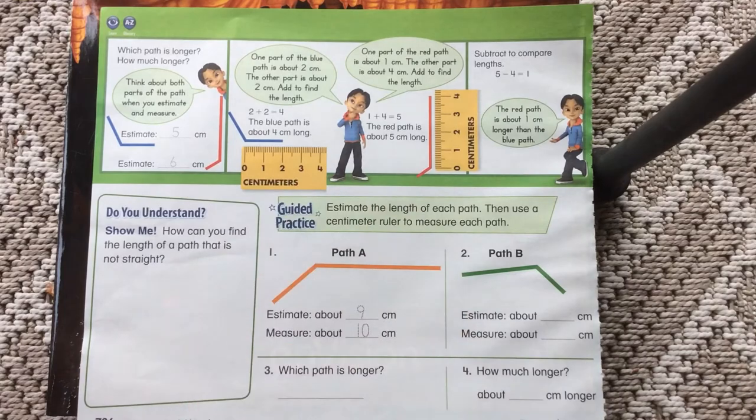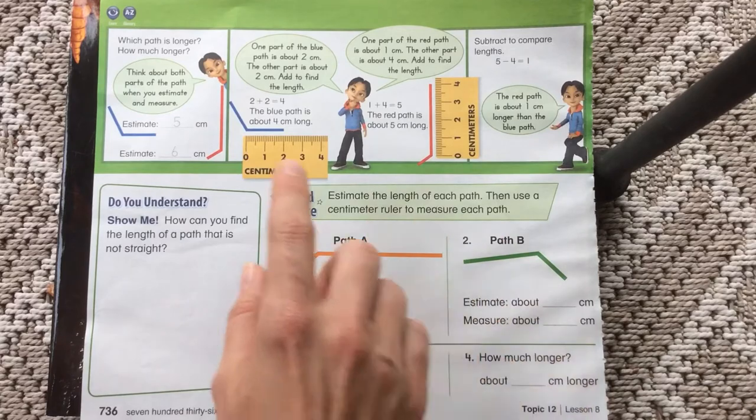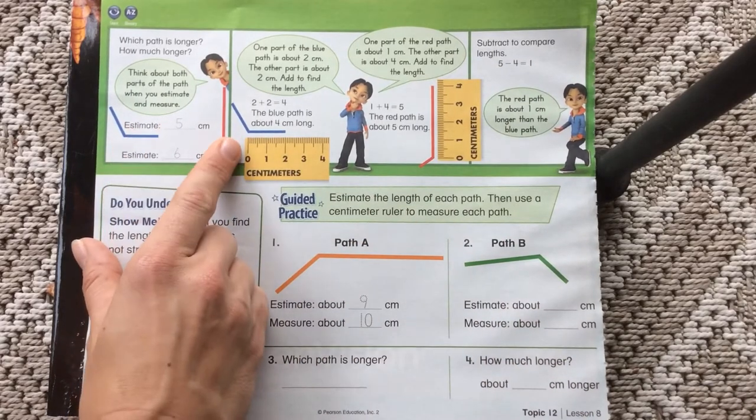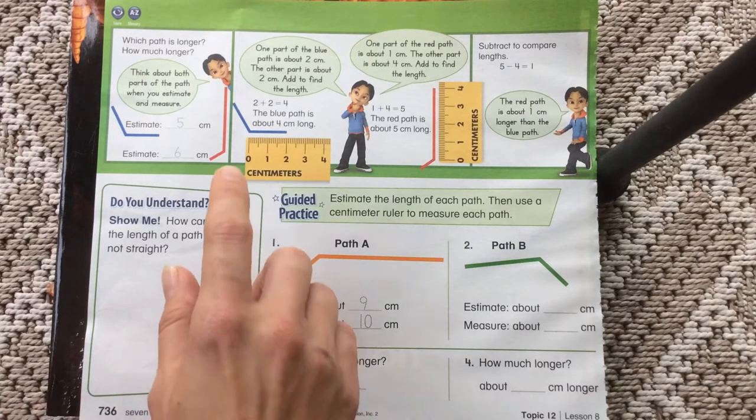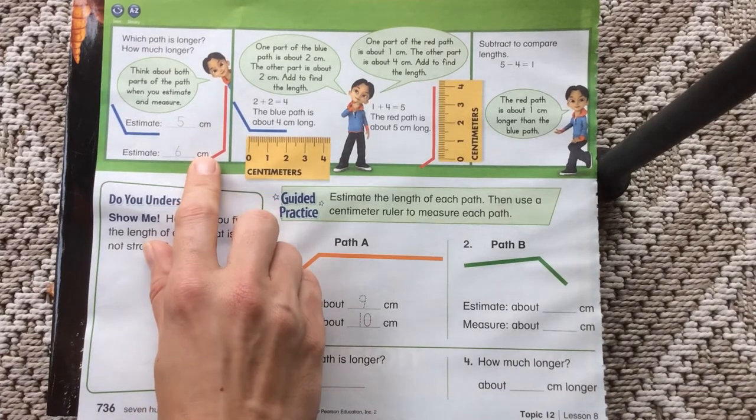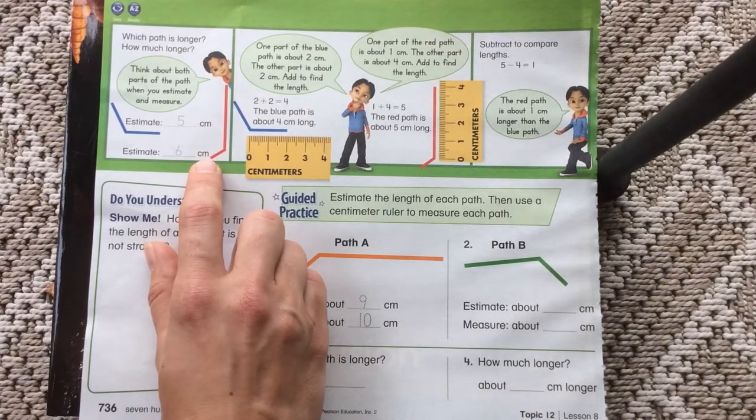So what we're doing is we're going to be measuring two different paths. You can see down here we have path A and path B. Up here he's got a blue path and a red path and we're going to be seeing which one is longer. When you are measuring the paths, first of all, you need to see what do they want you to measure and it looks like we're measuring in centimeters. So it's really important that we have those units and we know what we're using.